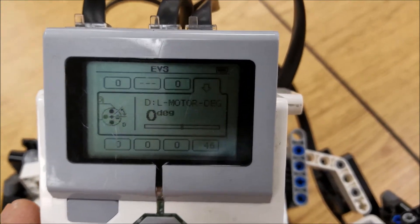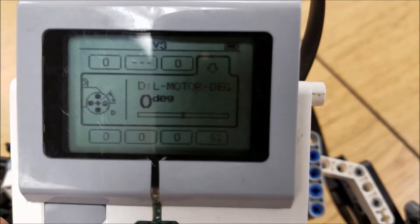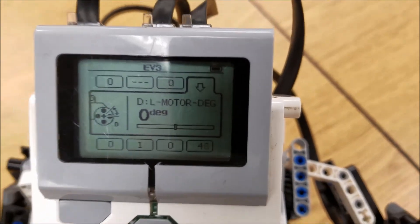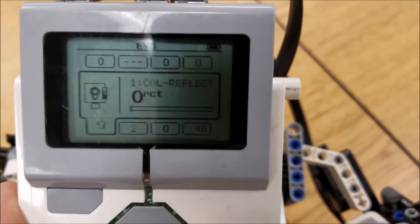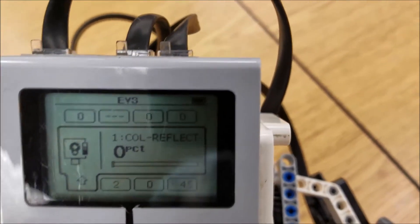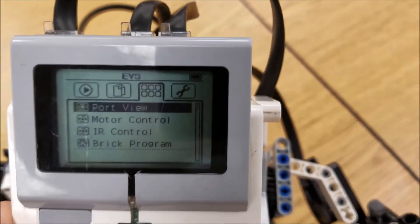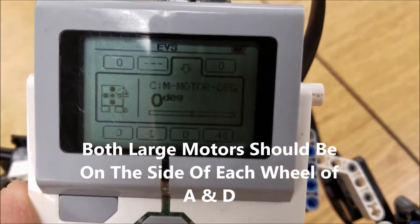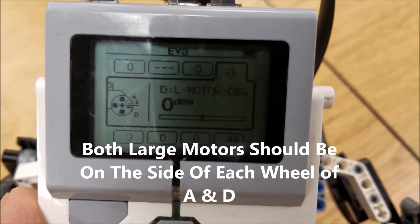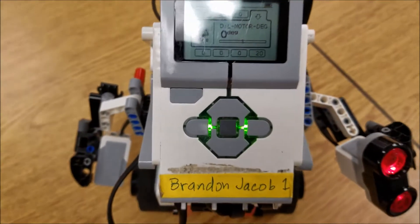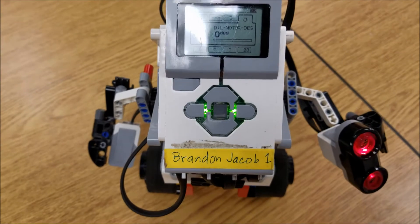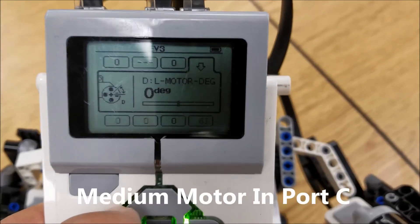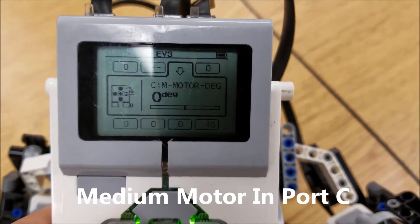and four is your ultrasonic. And then if we go up to your motors, we have your large motor is in D. A and D are going to be your large motors and they should be on the same side as his wheels or legs. And then that medium motor should be in C.